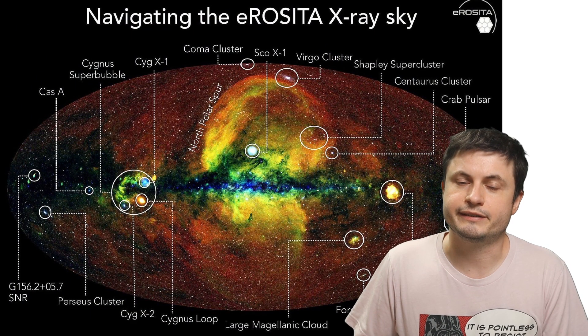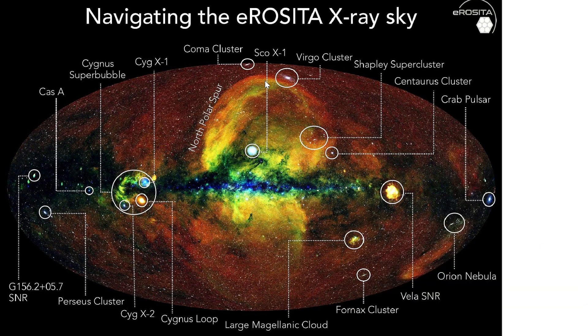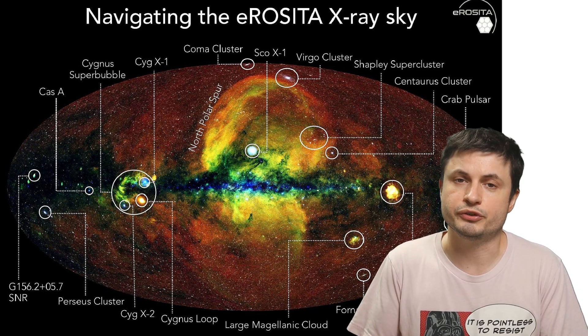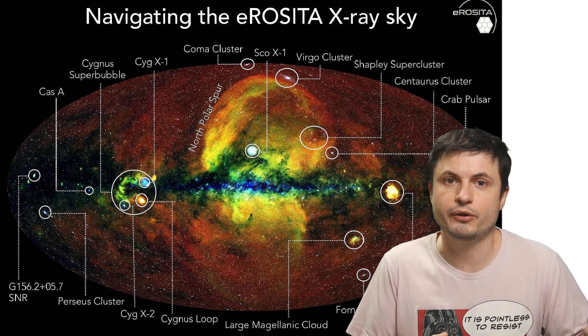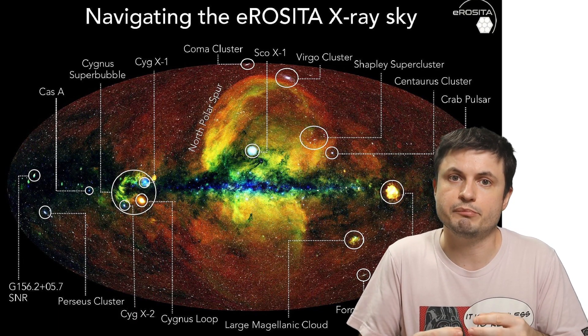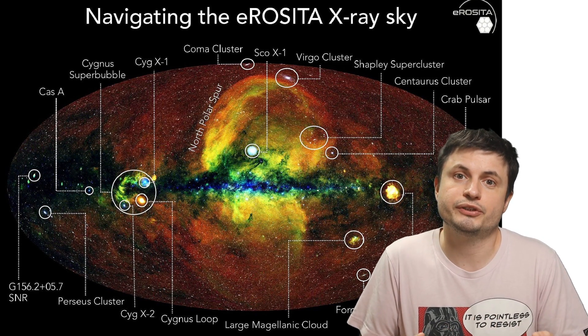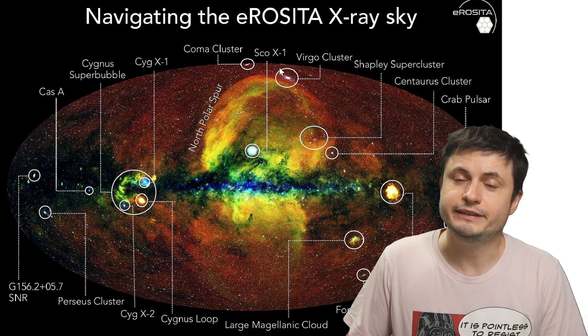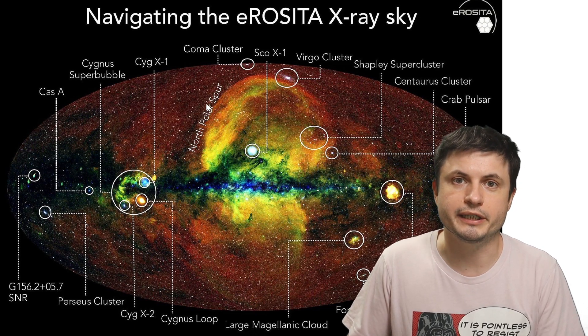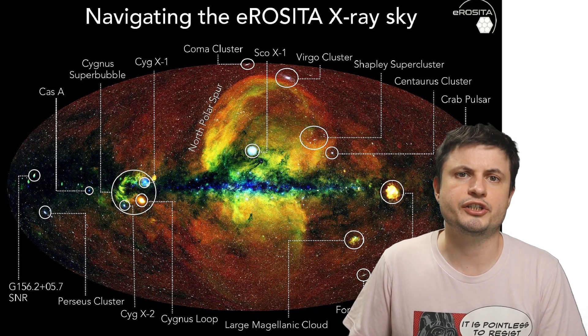But most interestingly is that the scientists behind the study were now able to connect the structure to the mysterious north polar spur. Which means that the north polar spur itself is most likely a part of the large bubble. Unlike the initial assumption that it was some kind of a supernova close to us it's more likely to be much much farther away and actually just represents the bubble itself at a distance of several thousand light years away from us. With this part itself being at least 20 to 30,000 light years across. Much much larger than we initially thought.